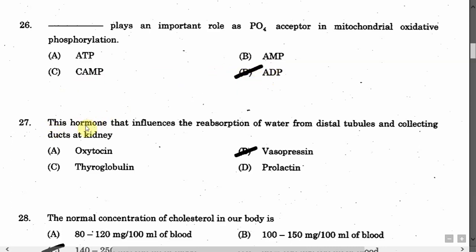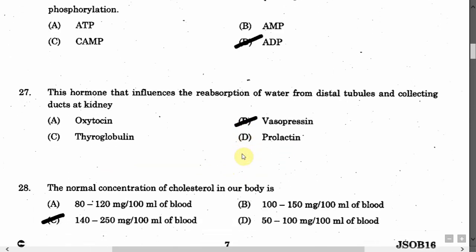The next question is: This hormone influences the reabsorption of water from distal tubules and collecting ducts of the kidney. Option A: Oxytocin. Option B: Vasopressin. Option C: Thyroglobulin. Option D: Prolactin. The correct answer is Option B, that is vasopressin.